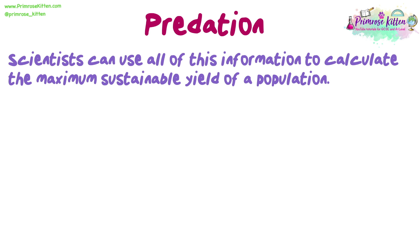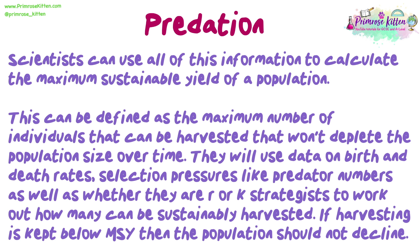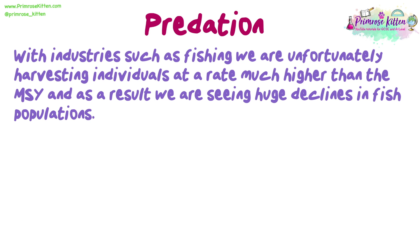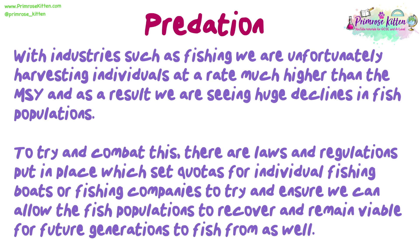Scientists can use all of this information to calculate the maximum sustainable yield (MSY) of a population — defined as the maximum number of individuals that can be harvested without depleting the population size over time. They use data on birth and death rates, selection pressures like predator numbers, and whether species are R or K strategists to work out how many can be sustainably harvested. If harvesting is kept below MSY, the population should not decline. With industries such as fishing, we are unfortunately harvesting at a rate much higher than the MSY, and as a result we are seeing huge declines in fish populations. To combat this, laws and regulations set quotas for individual fishing boats or companies, to allow fish populations to recover and remain viable for future generations.